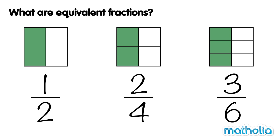Each of the squares is the same size. The same fraction of each square is coloured. We can see that one half, two quarters and three sixths are equal. They are equivalent fractions.